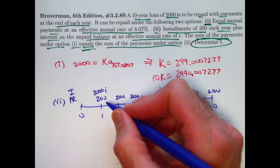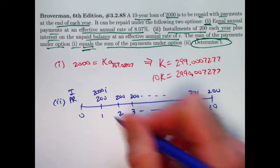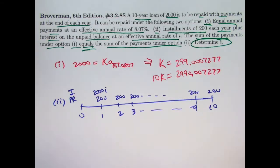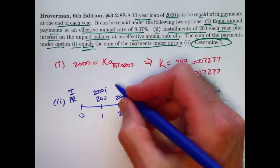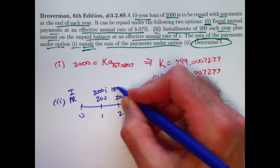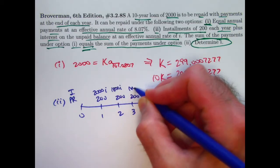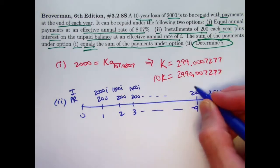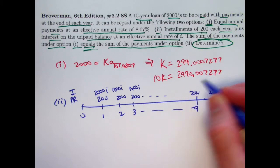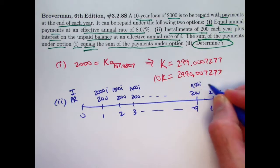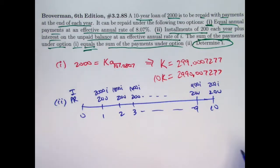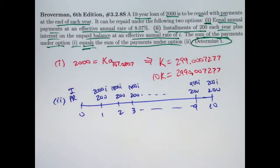Since your principal reduction was 200, the new balance right after that payment is going to be 1,800. The interest during the second year is going to be 1,800 times i. Then 1,600 times i, etc. At the end we're going to have 400i here, and 200i.